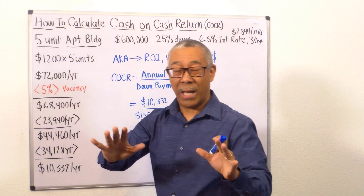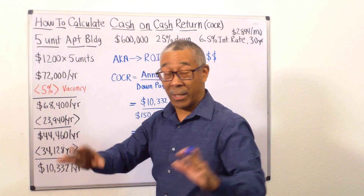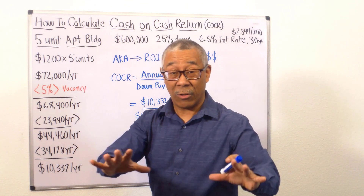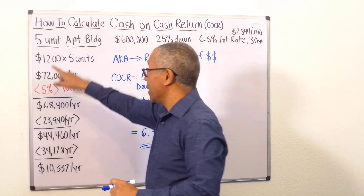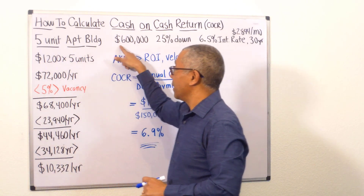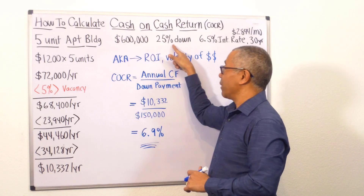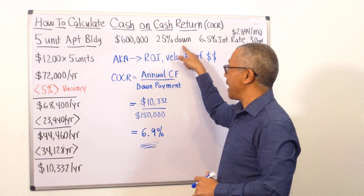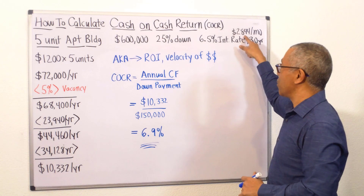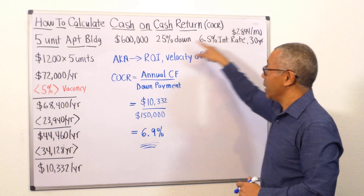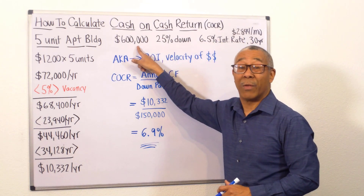I'm going to help you calculate the cash flow first on this property quickly — I have another video that shares how to calculate cash flow. So we have a five-unit apartment building. The purchase price is $600,000, 25% down. My monthly mortgage payment is $2,844. 25% down of $600,000 is $150,000.